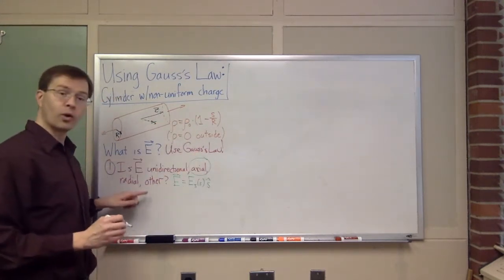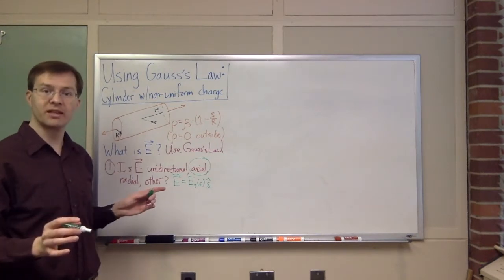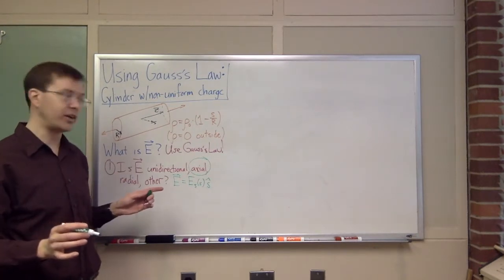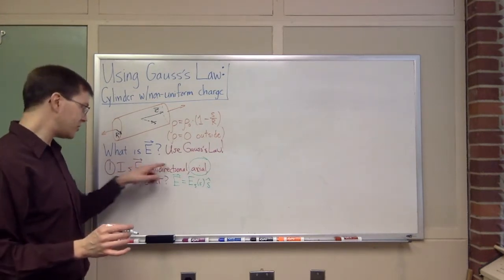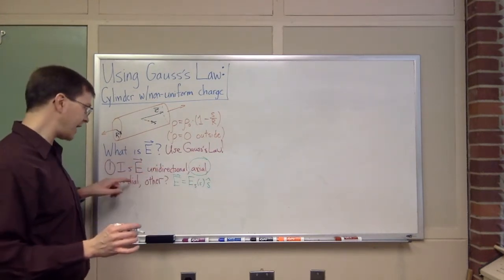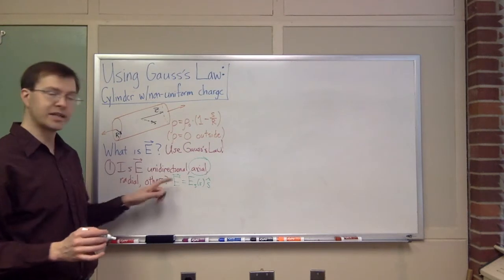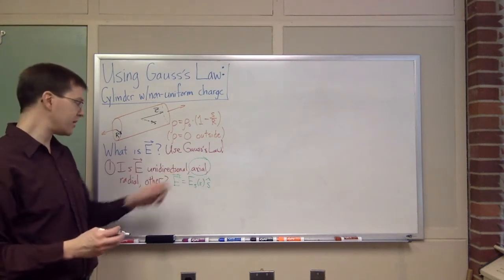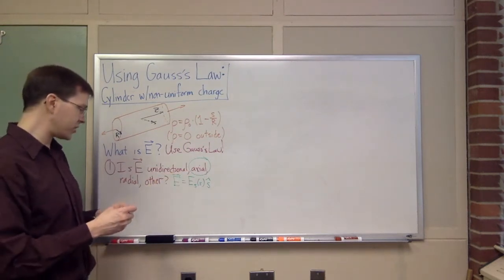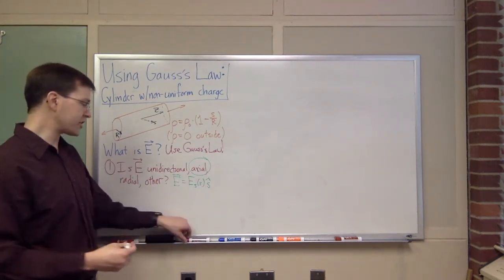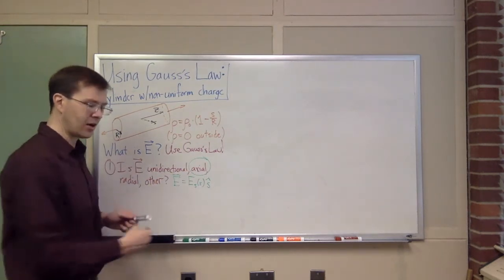So s-hat means straight away from the axis — it's some function straight away from the axis, and that function has to depend only on the distance from the axis s. It can't be a function of z. So I've got this special case: I'm in the axial case. If it's unidirectional, axial, or radial, we get to use Gauss's law. In this case, we're in good shape — first step taken care of.